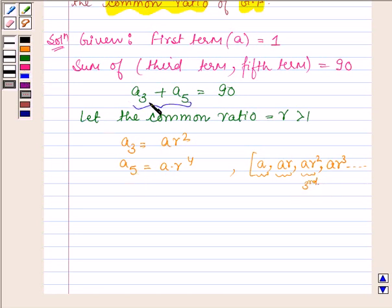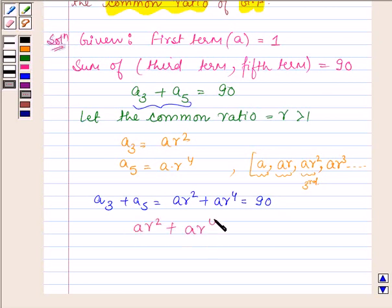We are given that sum of third and fifth term is 90 so we have a3 plus a5 equals ar² plus ar⁴ equals 90. Now a is 1, so on substituting the values we have r⁴ plus r² minus 90 equals 0.